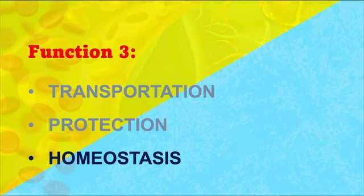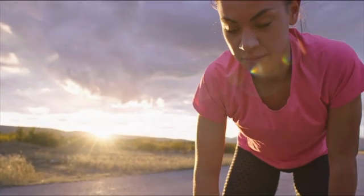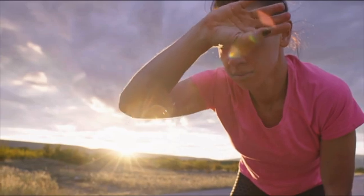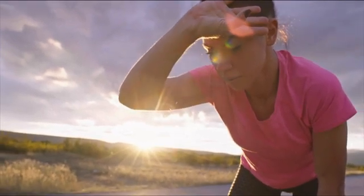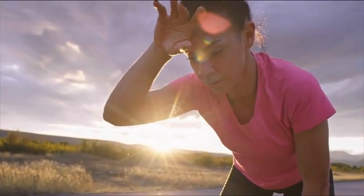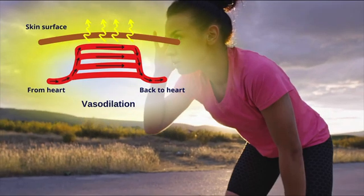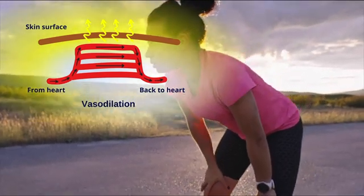The last function is homeostasis — essentially keeping things relatively stable in the body. If you go out in the hot sun on a summer day, maybe even out for a run, you start getting hot. You don't want your insides to get hot, so the blood helps with that. More blood gets routed away from your core and out to the periphery, like the skin. Because it's more superficial there, it's cooler, and when the blood passes by the skin, it gives off heat to the environment to keep things relatively stable on the inside.